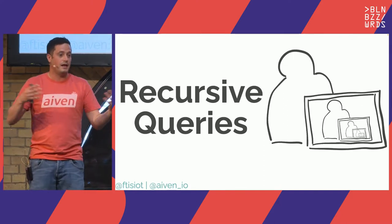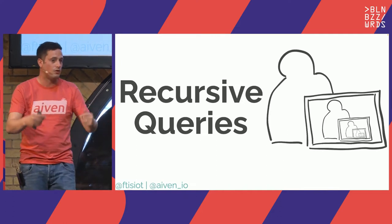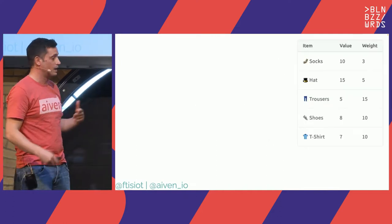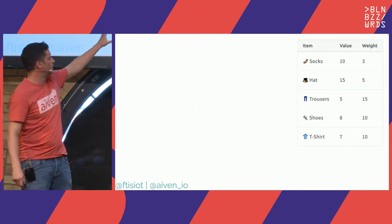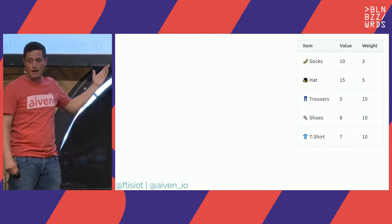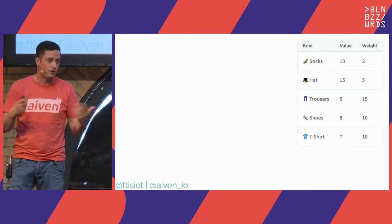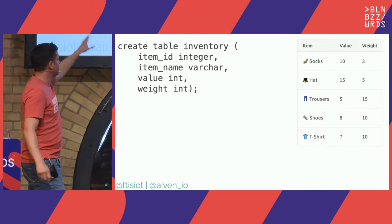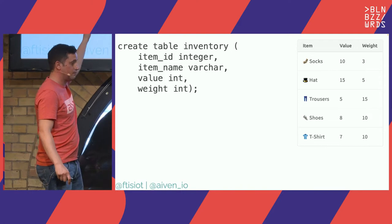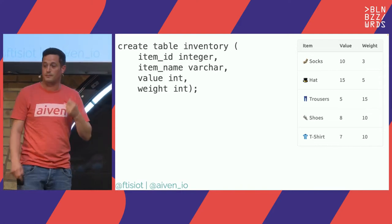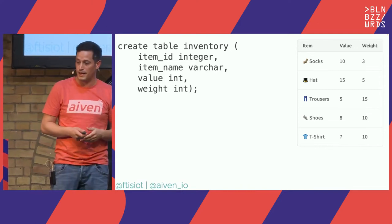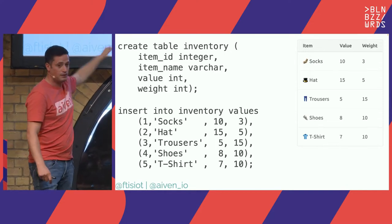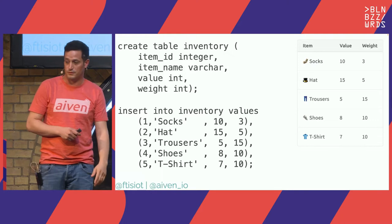Now let's talk about how to solve this in Postgres. First we need our table. So we had the initial set of items and I wanted to provide all the code you need to recreate the example yourself. I created a table called inventory. For each item I have the ID, the name, the value, and the weight. Then I have an INSERT statement to insert the relevant rows.